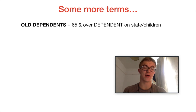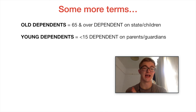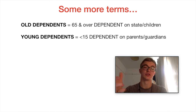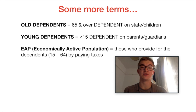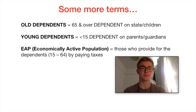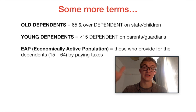The final thing to mention: old dependents are people aged 65 and over who are dependent on the state and their children. Young dependents are under the age of 15, dependent on their parents, guardians, and the state. These two groups are assumed to be outside of the workforce, so they depend on the economically active population — people between ages 15 and 64 who provide by paying taxes. The reason a country might want to manage its population is to ensure that its economically active population is able to provide adequately for both old and young dependents.